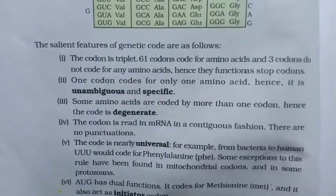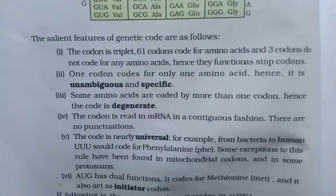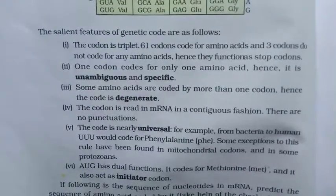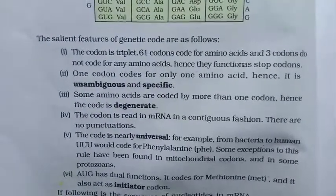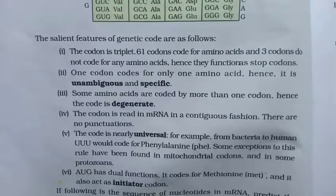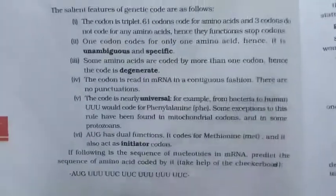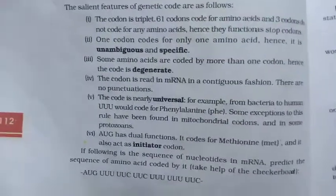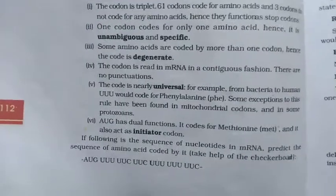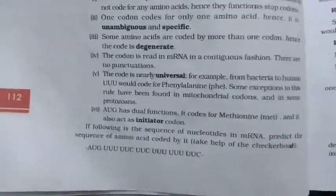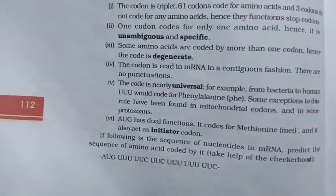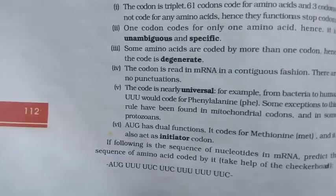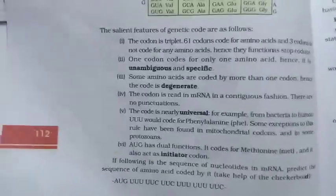Some exceptions to universality have been found in mitochondrial codons and in some protozoans. AUG has dual functions: it codes for methionine, and it also acts as an initiator codon. So if we are given a sequence of nucleotides in mRNA, with the help of the checkerboard we can predict the sequence of amino acids coded by that mRNA.